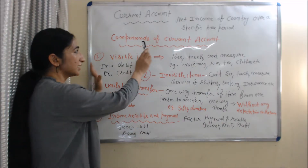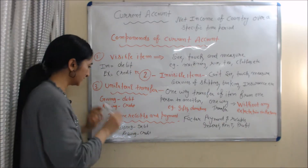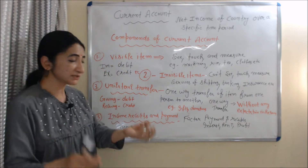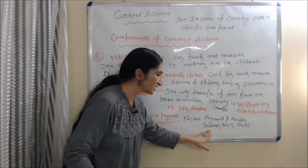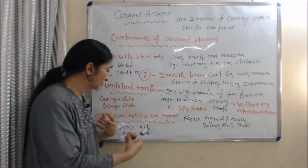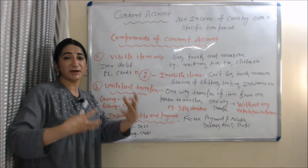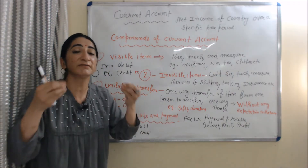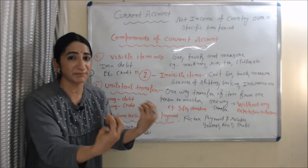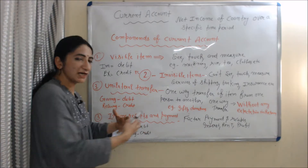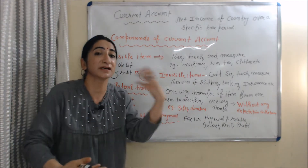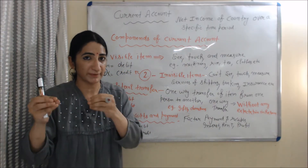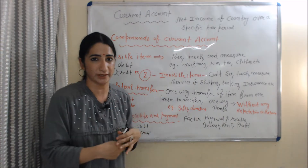The last component of the current account of balance of payment is income receipts and payments. Income receipts and payments means factor payments and receipts like interest, rent and profit. If you are receiving factor payments from another country in the form of interest, rent and profit, it will be credited in the balance of payment account because money is coming into your country. On the other hand, if you are making factor payments to another country in the form of interest, rent and profit, it will be debited in your balance of payment account because money is going from your country.